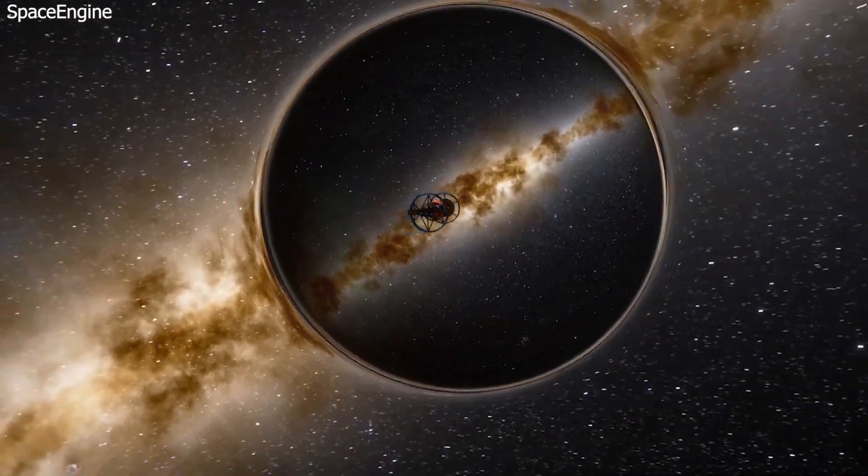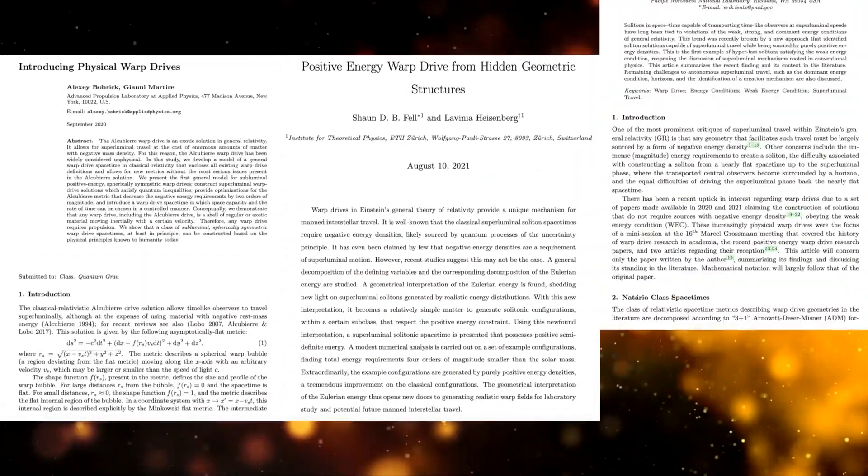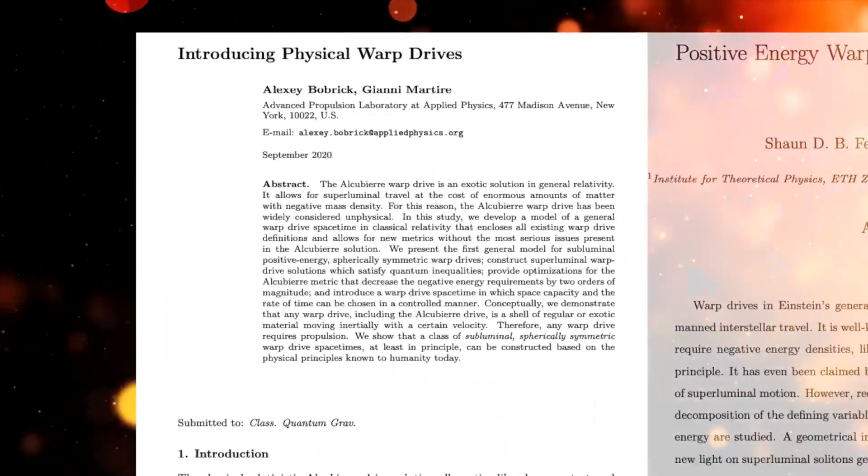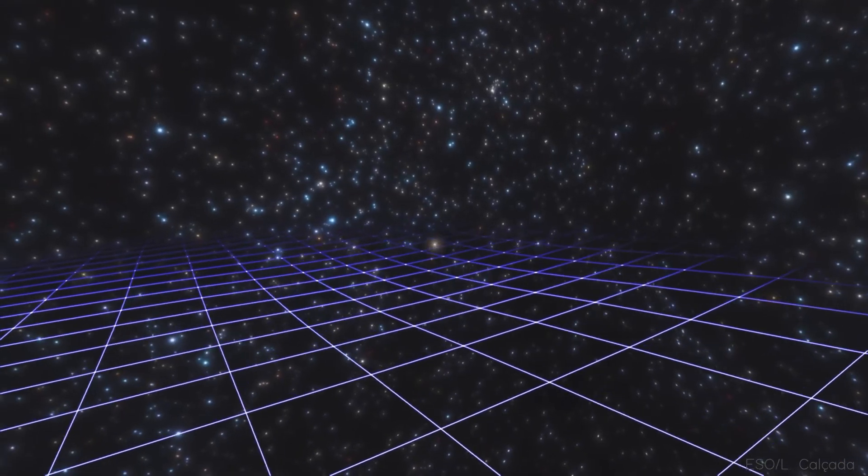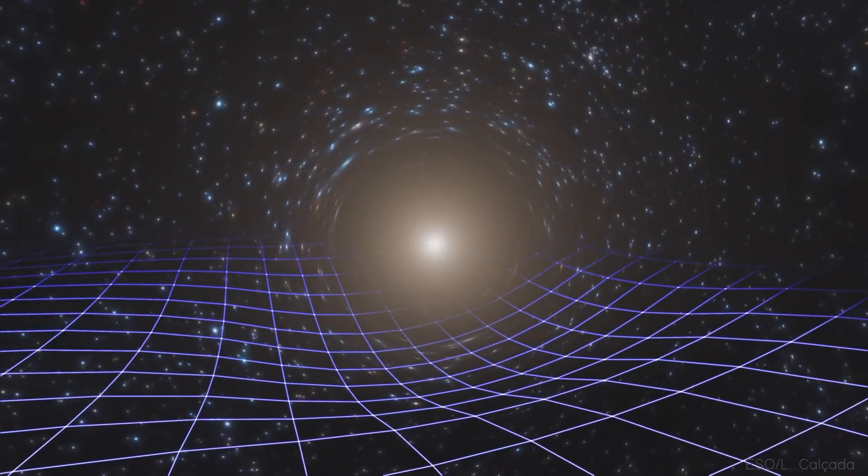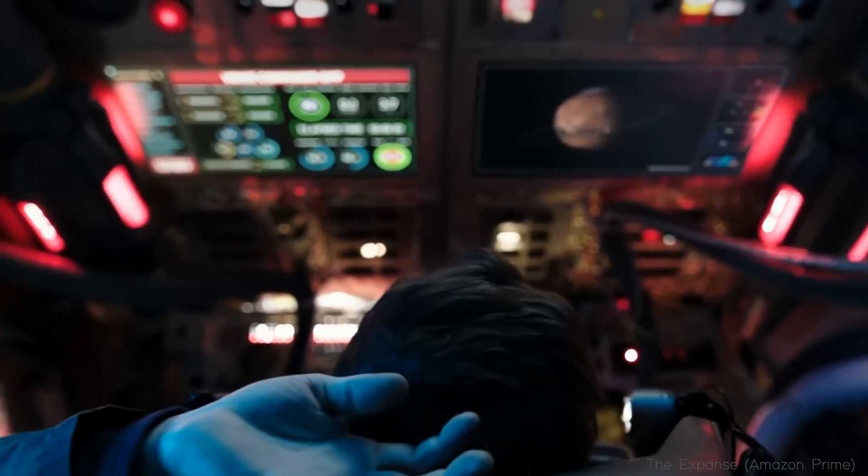These ideas often involve creating a warp bubble around a spacecraft, effectively contracting space in front of it and expanding space behind it. While purely theoretical at this point, these concepts are inspired by the bending of space-time described in general relativity, which is the same principle underlying the propagation of gravitational waves.